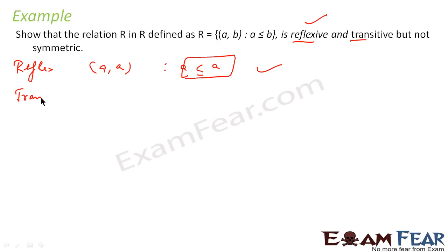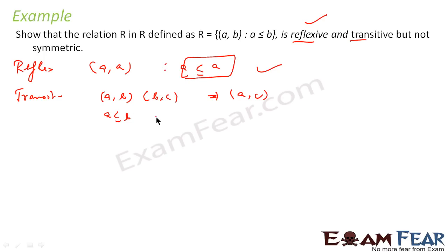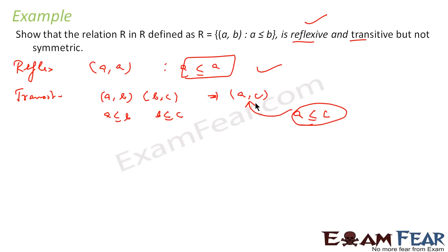For transitive: if (a, b) is a member then a ≤ b, and if (b, c) is a member then b ≤ c. If a ≤ b and b ≤ c, this automatically implies a ≤ c. If a ≤ c, then (a, c) is a member of this relation — so the transitive property holds.